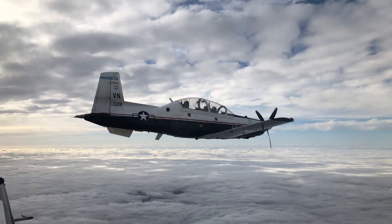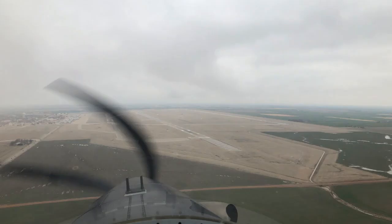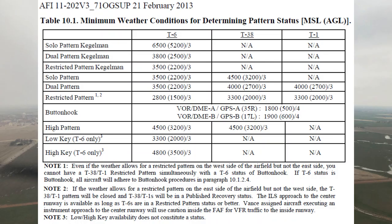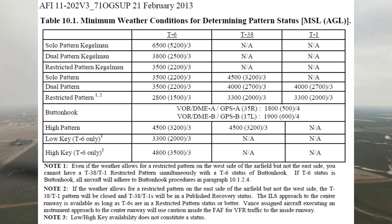If weather does not permit student solo flight to the MOA, it may still be possible to solo in the traffic pattern only. At Vance, the ceiling must be 3,500 feet MSL and 3 miles statute visibility for a solo pattern status. The dual pattern at Vance has the same ceiling and visibility requirements as the solo pattern. In order for there to be a visual traffic pattern at Vance, the ceiling must be at least 2,800 feet MSL with 3 statute miles visibility. When the ceiling is between 1,500 feet AGL and 2,200 feet AGL and the visibility is at least 3 statute miles, the pattern status will be restricted.